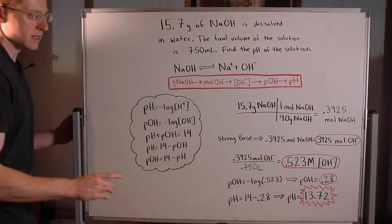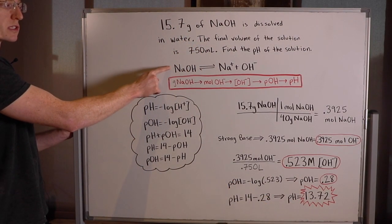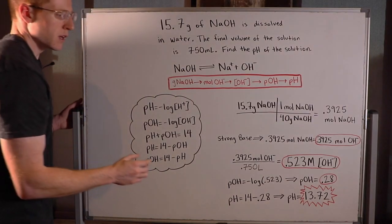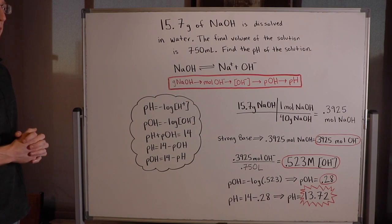And this makes sense, right? This is a very high pH, and that's because we added a strong base into a solution. So that's what we would expect. If we had obtained an answer that was less than 7, we would probably have known that we'd made a mistake somewhere.